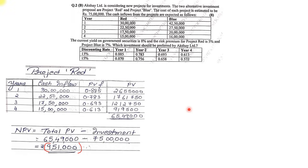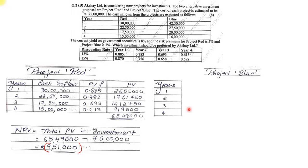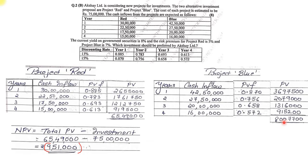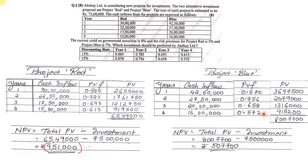For Project Blue: cash inflows are 42.50 lakh, 27.50 lakh, 20 lakh, and 16 lakhs. PV factors at 15 percent are 0.870, 0.756, 0.658, and 0.572. Multiplying and summing, the total PV comes to 80 lakh 7,700. NPV = 80,07,700 − 75,00,000 = positive 5,07,700. Since Project Blue has a positive NPV of 5 lakhs 7,700, it is preferred - Akshire should invest in Project Blue.